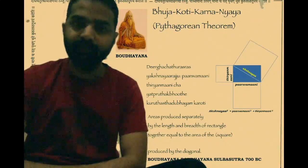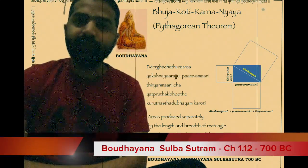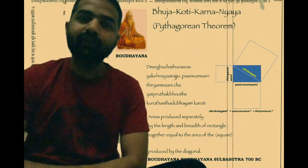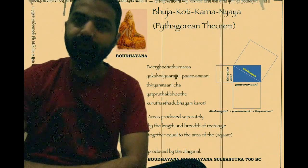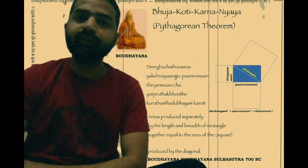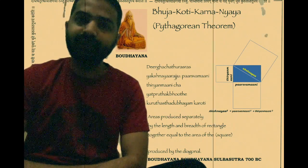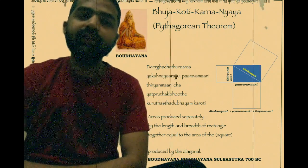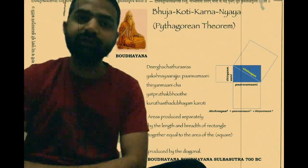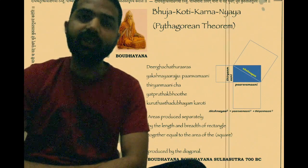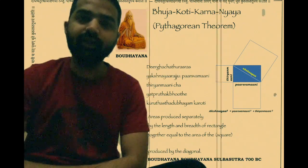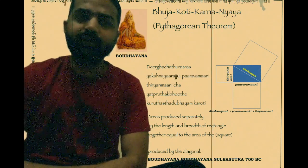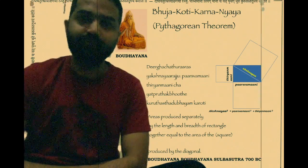While describing them in one of the chapters, Baudayana describes — please have a quick look at the diagram shown in the background. Dheerga chadurasya — chadurasya is a square; Dheerga chadurasya is an elongated square, which is nothing but a rectangle. Akshna ya rajuhu — Akshna is the diagonal, and Rajuhu means rope, so this refers to the rope forming the diagonal.